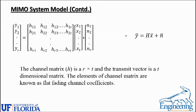This is the final MIMO system model in mathematical form. There are four types of vectors: the received symbol vector, the channel matrix H, the transmitting symbols X1 to XT, and the noise vector N. A compact form of this matrix equation is written as Y-bar equals H times X-bar plus N-bar. The elements of the channel matrix are usually known as flat fading channel coefficients.